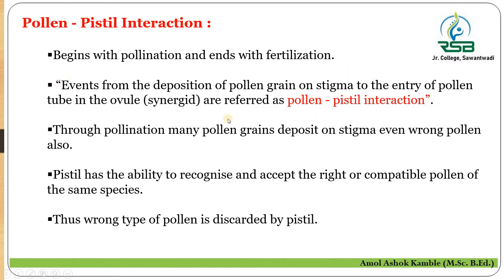In the process of deposition of pollen grains on the stigmatic surface of a flower, many pollen grains deposit on the stigma. However, only the compatible and right pollen grain is accepted by the stigmatic surface; the rest of the pollen grains are discarded by the pistil or the female reproductive structures.